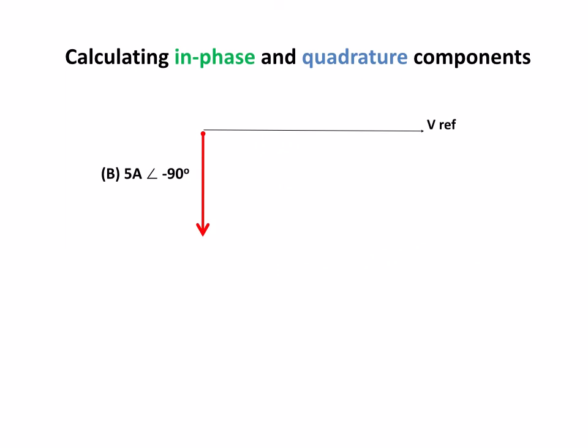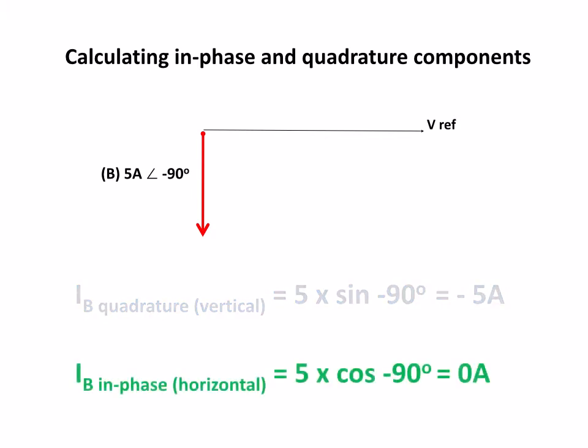The vertical phasor, we've got 5 amps at minus 90, so we're going to do the same calculations. The quadrature component will be 5 times the sine of minus 90 and we get minus 5 amps, which makes sense because all of that phasor is going down. And as we'd expect, there's no horizontal component. 5 times the cosine of minus 90 gives us 0 amps.